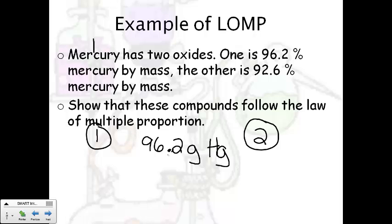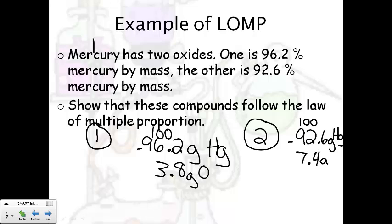And then to find the other percentage that's just oxygen, we've got to subtract from 100. So we get 3.8 grams of oxygen. Now over here, the second one had 92.6 grams of Hg. And again, to find the percentage that was just oxygen, or the portion that was just oxygen, we want to subtract from 100. So you get 7.4 grams of oxygen.